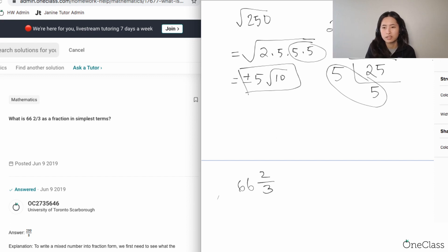You would multiply 3 times 66, then you need to add that to 2—that's plus 2—to give you your new numerator. So this is just going to be 200.